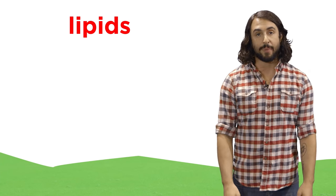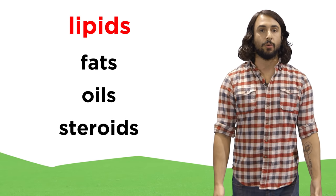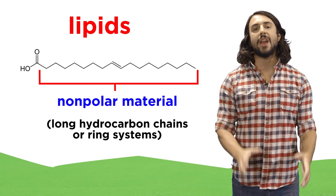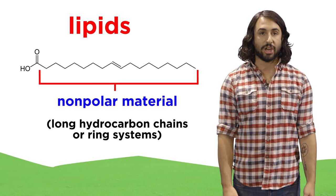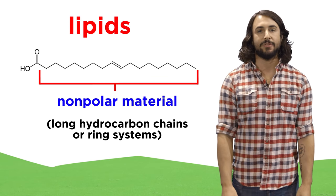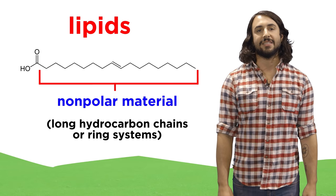As we continue our survey of biomolecules, we arrive at lipids. Lipids include things like fats, oils, and steroids, and the key characteristic that defines them is that they are largely nonpolar, composed predominantly of long hydrocarbon chains or ring systems. Unlike the two types of polymers we've discussed, lipids are usually not big enough to be classified as macromolecules.